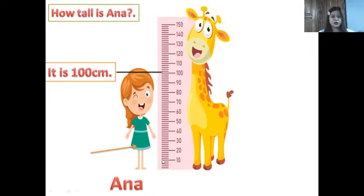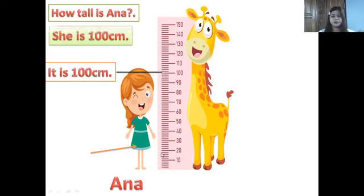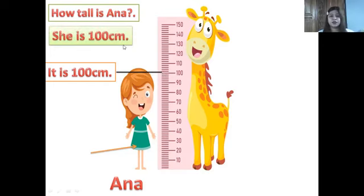Let's count again: 10, 20, 30, 40, 50, 60, 70, 80, 90, 100. It is 100 centimeters. This is her height. She is 100 centimeters. How tall is Anna? She is 100 centimeters. We use 'she' because she is a girl.